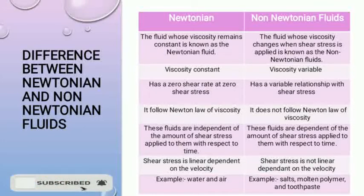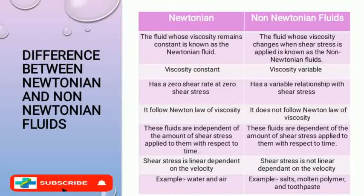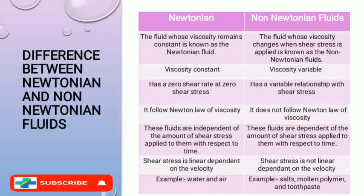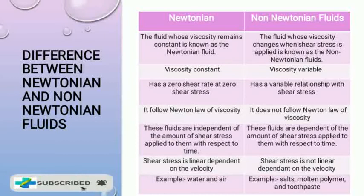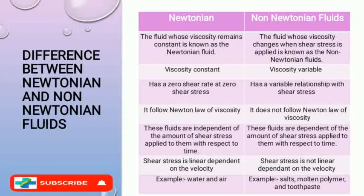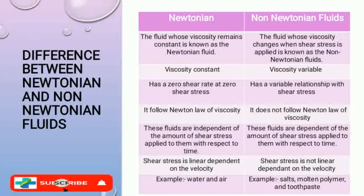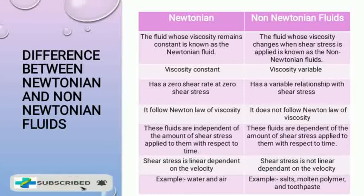Newtonian fluids are independent of the amount of shear stress applied with respect to time, whereas non-Newtonian fluids are dependent on it. Shear stress is linearly dependent on velocity in Newtonian fluids, whereas it is not linear in non-Newtonian fluids. Examples of Newtonian fluids are air and water, while examples of non-Newtonian fluids are salt solutions, molten polymers, and toothpaste.